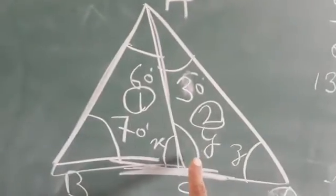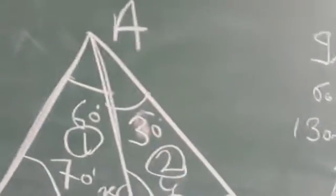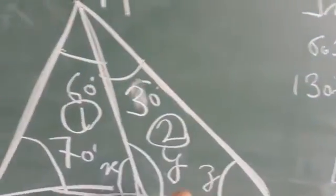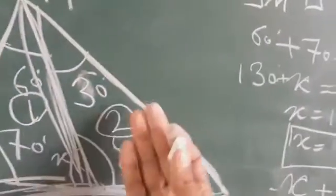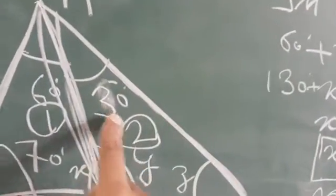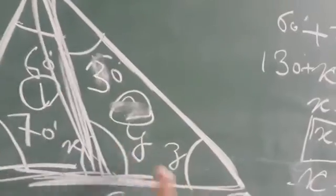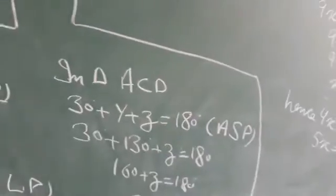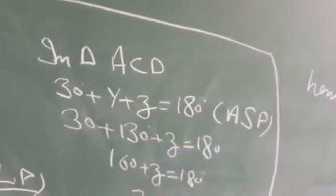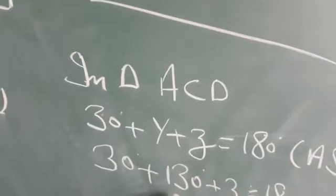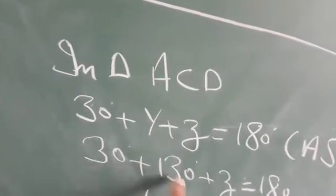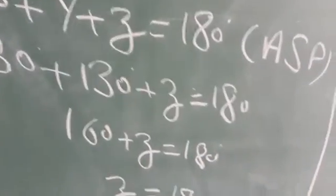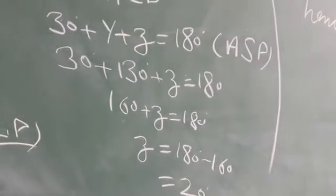X और Y की value आ गई। अब second triangle - right hand side वाला triangle देखेंगे। तीनों angles का sum 180 degree: 30 + Y + Z = 180 degree। 30 + 130 = 160 degree। Z = 180 - 160 = 20 degree।